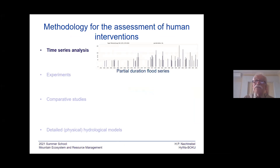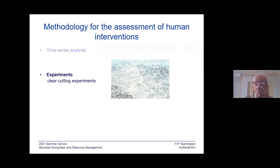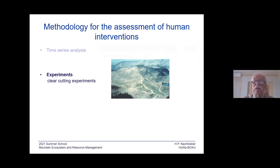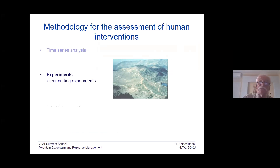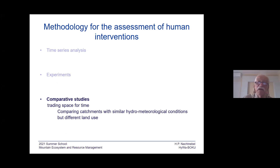What kind of methodology do we have for assessing human interventions? One way is to do time series analysis — you see one example here. Another approach is that we do experiments. There are famous experiments with respect to clear-cutting that are documented quite well, so we study what happens if we make real experiments. We also make comparative studies, looking for similar hydrological catchments under similar hydro-meteorological conditions but with different land uses, and then we try to compare.